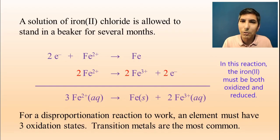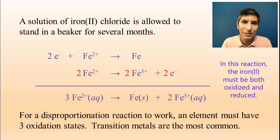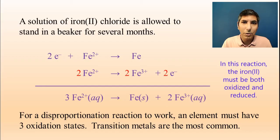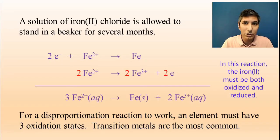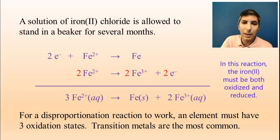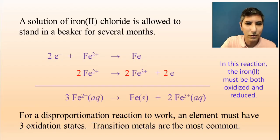Generally speaking, for a disproportionation reaction to work, an element must have at least three oxidation states. That's why transition metals are very common for these reactions. In the case of iron, you have iron two-plus, iron three-plus, and iron metal. With copper, you have copper one-plus, copper two-plus, and copper metal. That's why transition metals are the most common cases with disproportionation reactions.